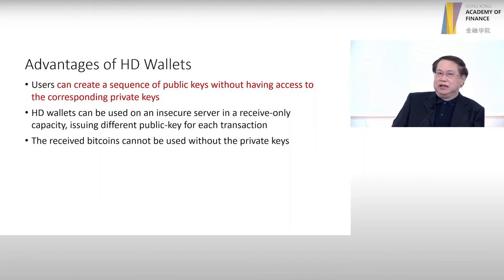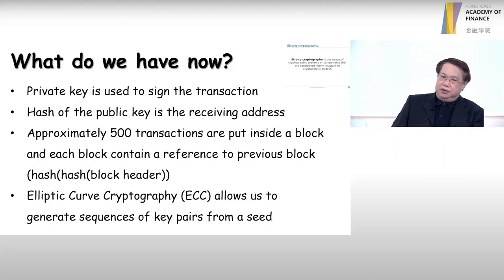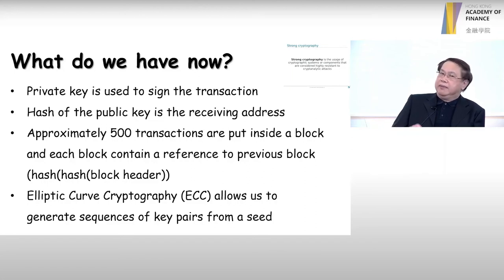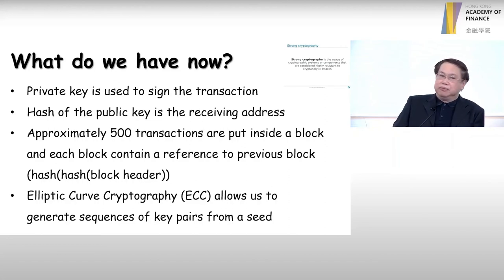A very quick summary: in Bitcoin or in cryptos, the private keys are used to sign transactions. The hash of the public key is used to receive Bitcoin. In every block in the blockchain, there are about 500 transactions, and they are chained together and put into the public ledger called the blockchain. With ECC, it actually allows us to generate all the key pairs from a seed. That's the nice thing about the cryptographic technique used in cryptocurrency today.